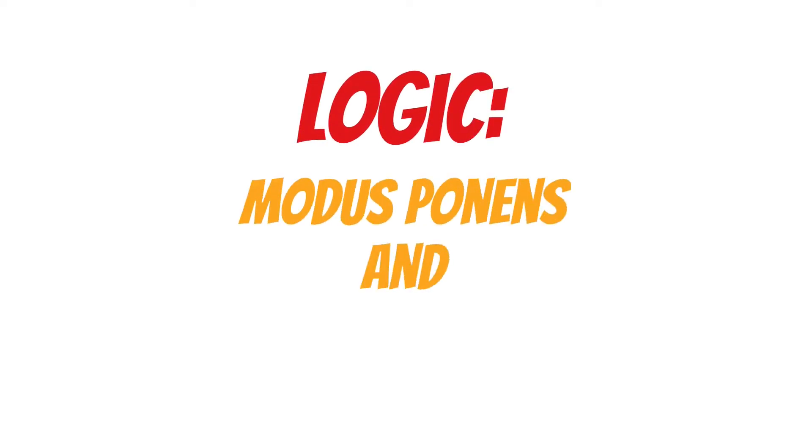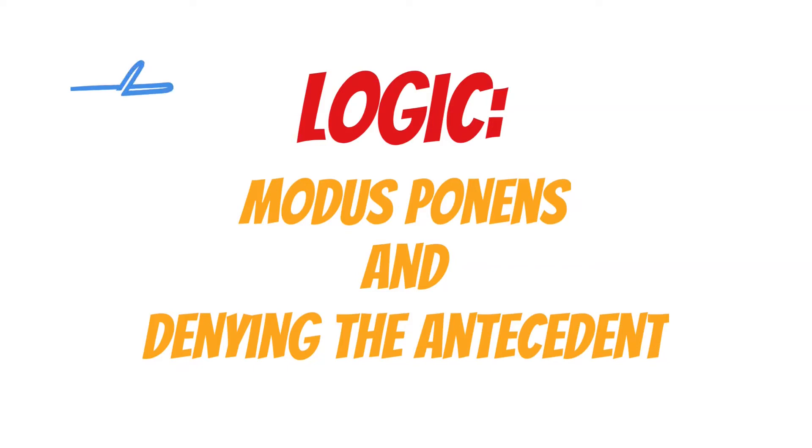In this video, I will give an example of valid reasoning, called modus ponens, and an example of invalid reasoning, the fallacy of denying the antecedent.